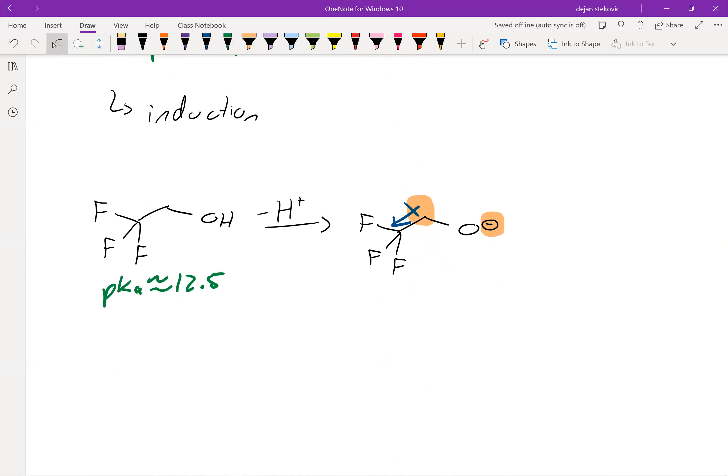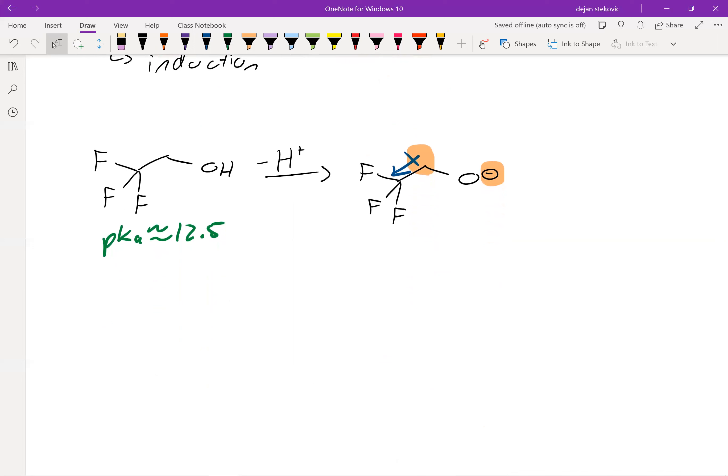But remember, this is exponential. And so three and a half would be somewhere about 1000, maybe 10,000 times more acidic.